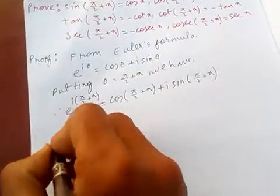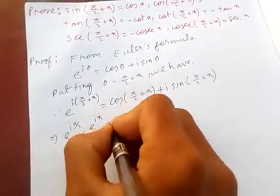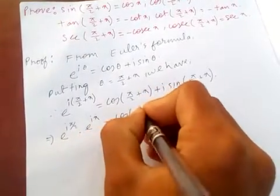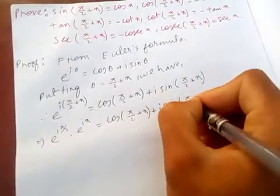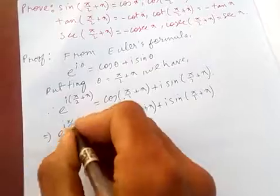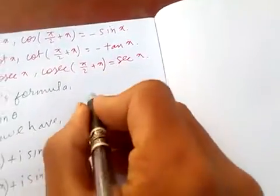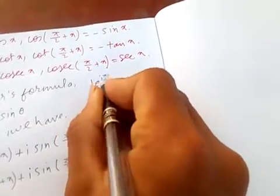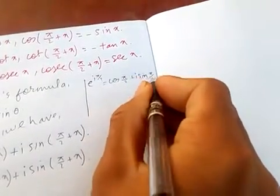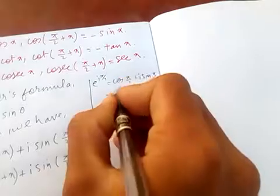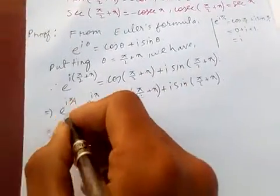Simplifying the left side: e^(i·π/2) · e^(ix) = cos(π/2 + x) + i·sin(π/2 + x). Using Euler's formula again, e^(i·π/2) = cos(90°) + i·sin(90°). We know cos(90°) = 0 and sin(90°) = 1, so e^(i·π/2) = i.